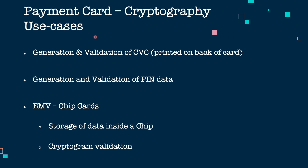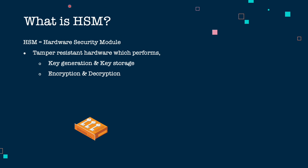In payment cards, we use both symmetric and asymmetric key cryptography. Some use cases include generation and validation of CVC, which is printed on the back of the card or the magnetic stripe; generation and validation of PIN numbers; data stored within the EMV chip card using asymmetric key cryptography; and cryptogram validation using symmetric key cryptography.